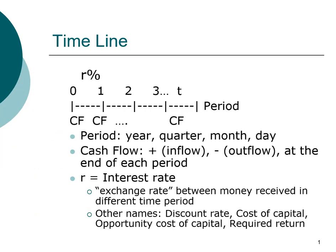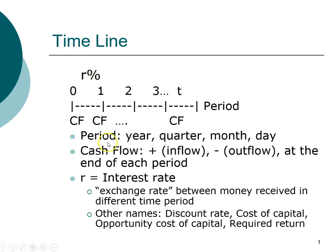The first tool I'm going to introduce for understanding the time value of money is a timeline. Put very simply, it's just a shorthand way for us to put all the relevant and important information onto a simple structure. A timeline has to do with time — we refer to these as period zero, one, two, three, and so forth. Underneath we write out the cash flow amounts, and we also include the interest rate.